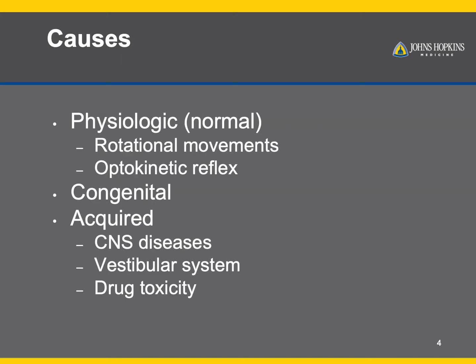The causes of nystagmus can be divided into three broad categories: physiologic, congenital, or acquired. Physiologic nystagmus is when the eye movement is a normal response to a stimulus in our surroundings, such as when we're spinning around or looking at moving objects, a phenomenon also known as the optokinetic reflex.